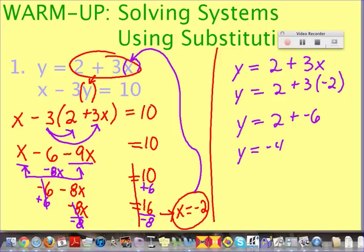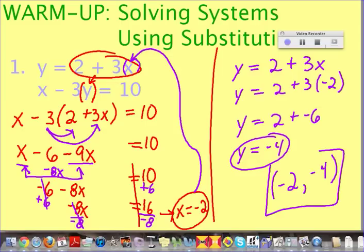Now remember, our solution is really a point, so it's best to write your final answer as a point with an x and y coordinates. So negative 2 is our x value, and negative 4 is our y value, and that really is our final solution. That is the intersection point between these two lines. If we were to make a table of both of these equations, we would come up with negative 2 and negative 4 as the common point in both equations.